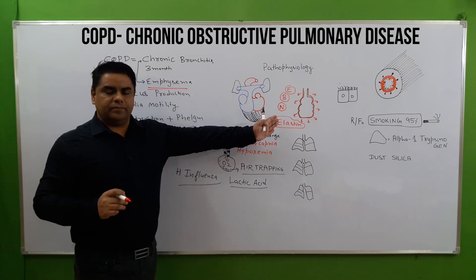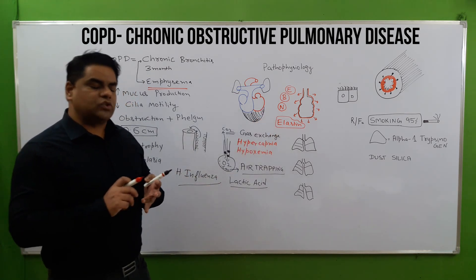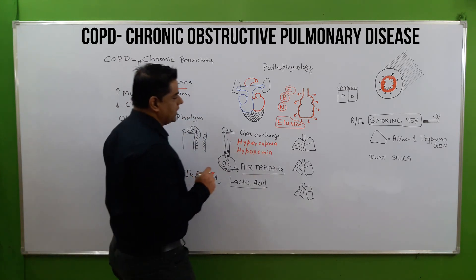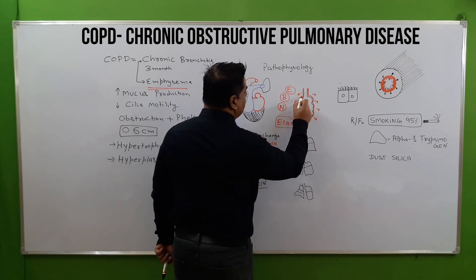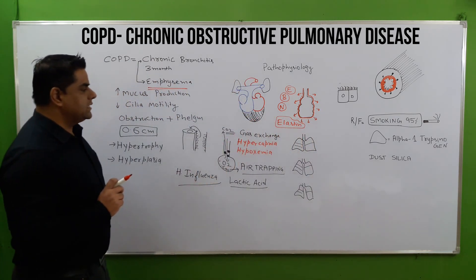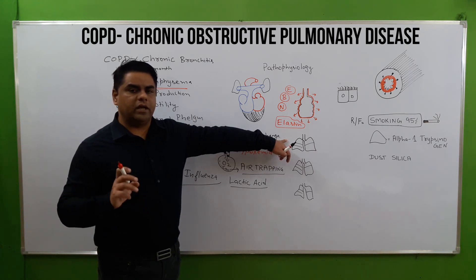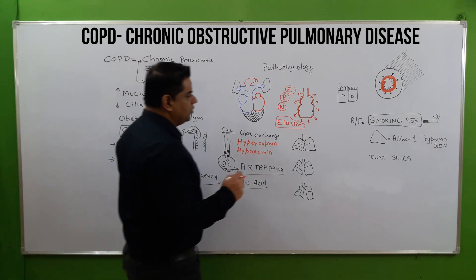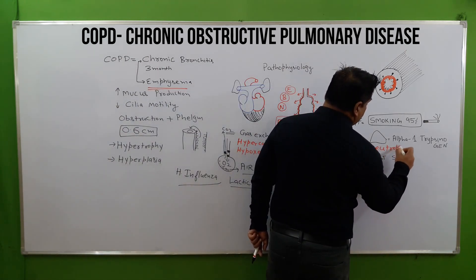The immune system gets activated. Neutrophils and basophils reach the area and cause inflammation by releasing cytokines. This elastin layer is very delicate and is protected by alpha-1 trypsinogen, which is an inhibitor of neutrophil elastase — a protease that digests tissues.